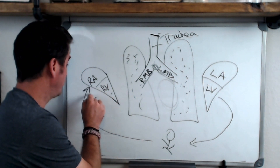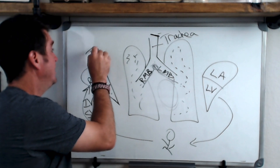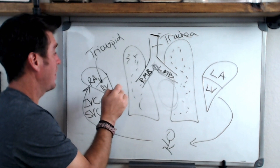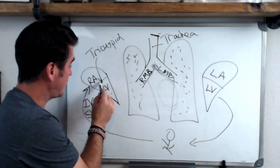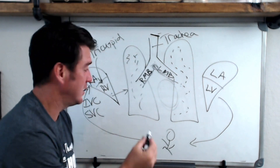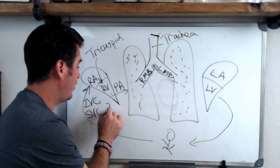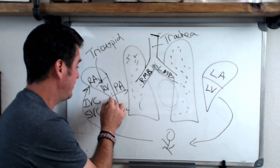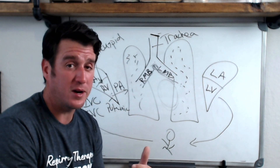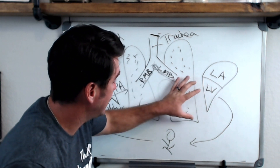Once blood goes to the right atrium, it passes through a valve called the tricuspid valve. Once it passes through the tricuspid valve, it goes to the right ventricle and then to pulmonary circulation. It goes through the pulmonary artery via the pulmonic valve.